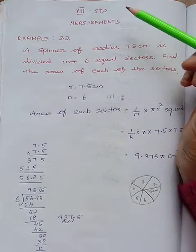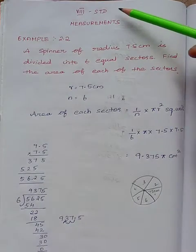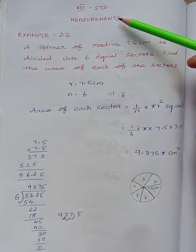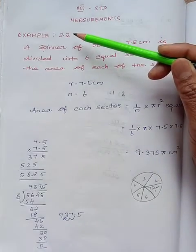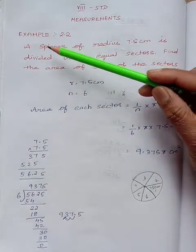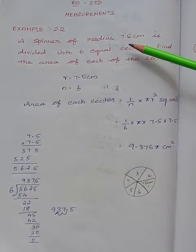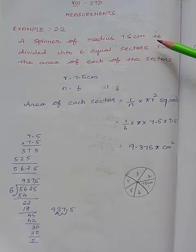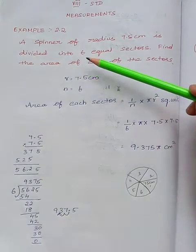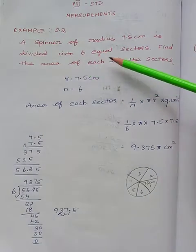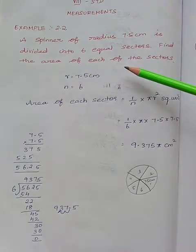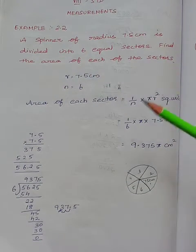Hi children, today we are going to learn 8 standard measurements, example 2.2. A spinner of radius 7.5 cm is divided into 6 equal sectors. Find the area of each of the sectors.